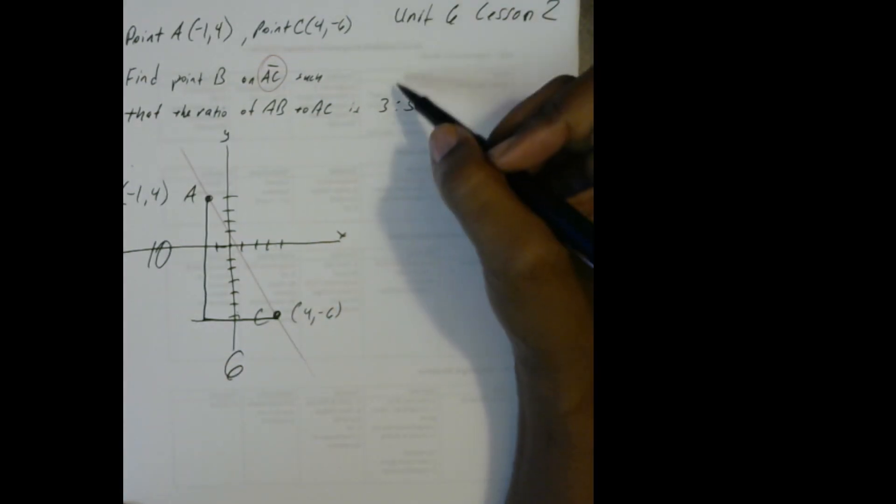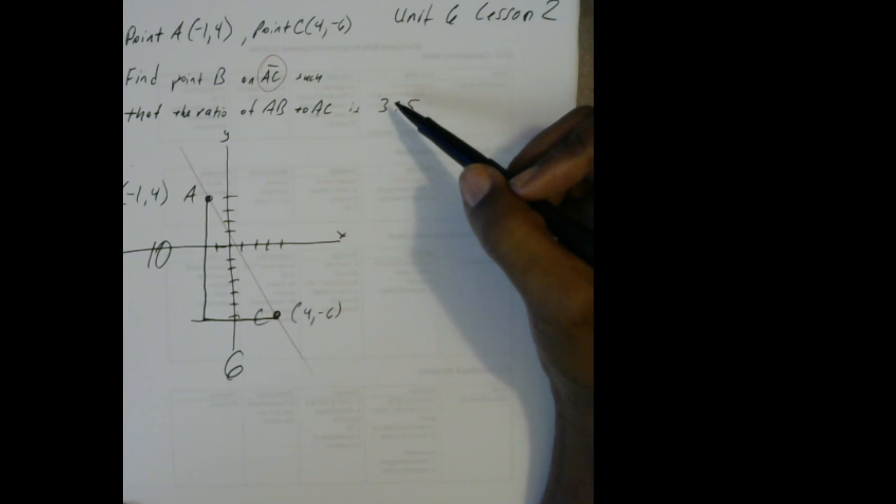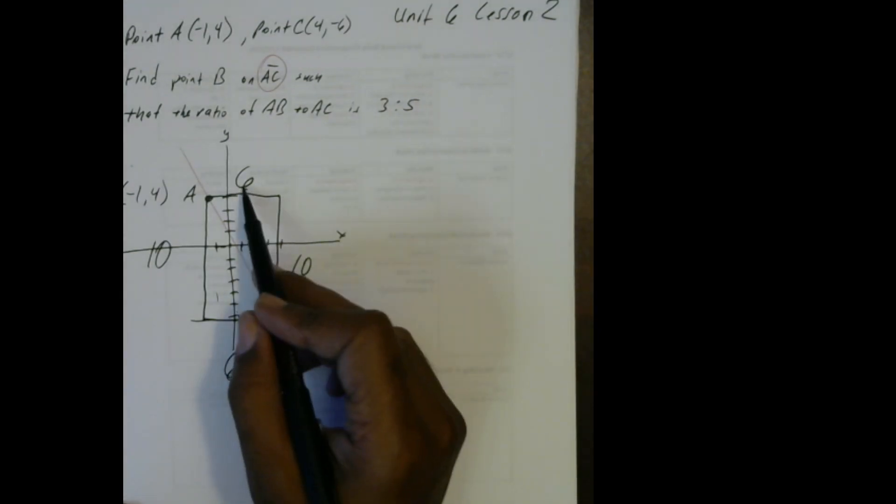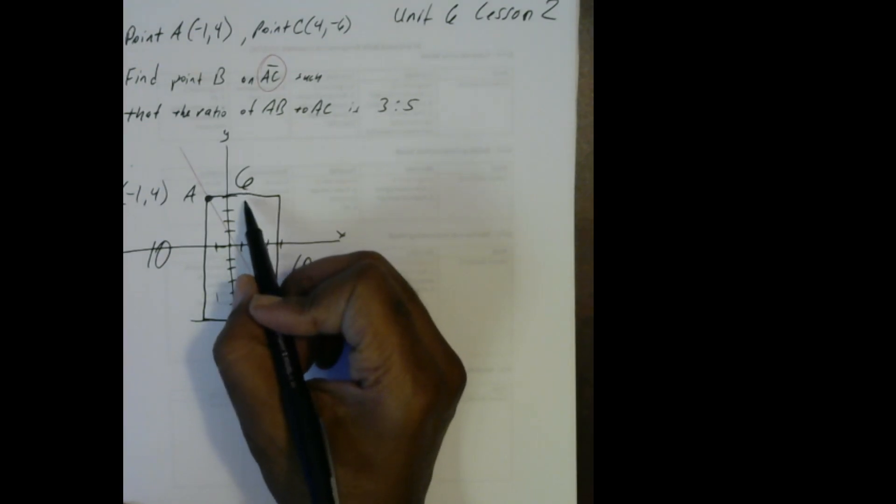And they want us to use instead a ratio of 3 to 5. Okay, so that means we're going to go down instead of 10 times and over 6. I think they want us to do it this way. Let's go over 6 times here and down 10. So a 3 to 5 changes this from a 6 to 10 to a 3 to 5.